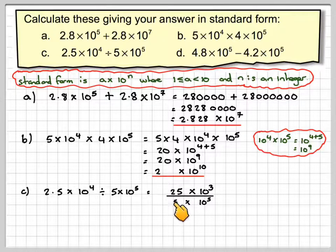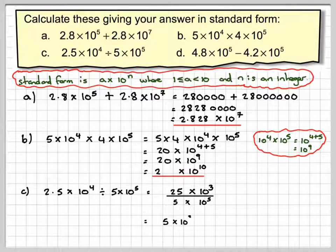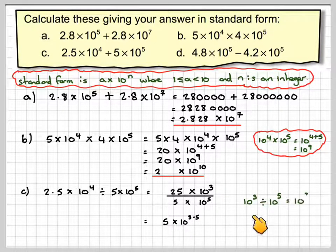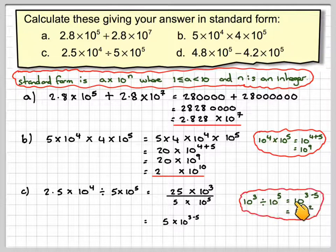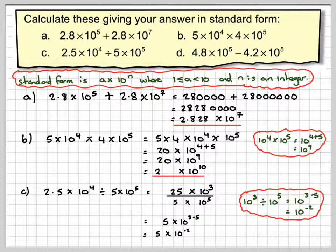Then if we do 25 divided by 5, that's going to give me 5. And then using the rules of indices, that gives me 10 to the 3 minus 5. 10 cubed divided by 10 to the 5 is 10 to the 3 minus 5, or 10 to the minus 2, which gives me 5 times 10 to the minus 2.